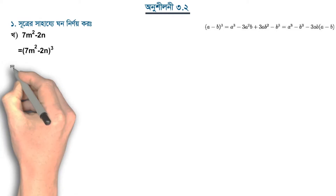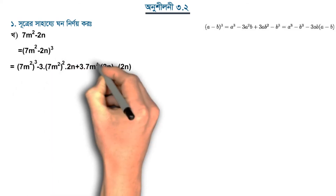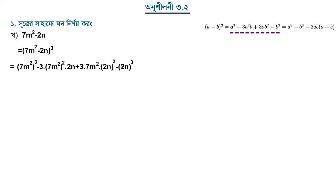Now we will apply this to 7m squared minus 2n whole cube. Using the formula, we write: (7m²)³ minus 3 into (7m²) squared, where a is 7m² and b is 2n, then into 2n plus 3 into 7m² into (2n) squared minus (2n) whole cube.